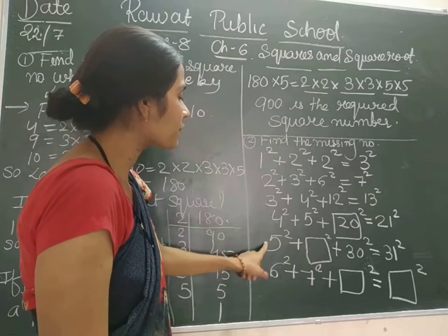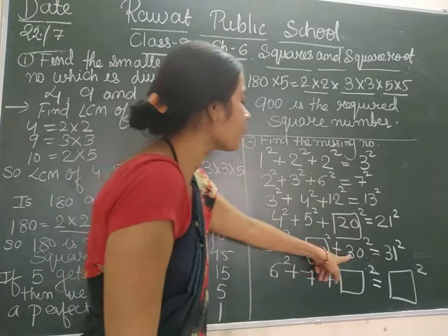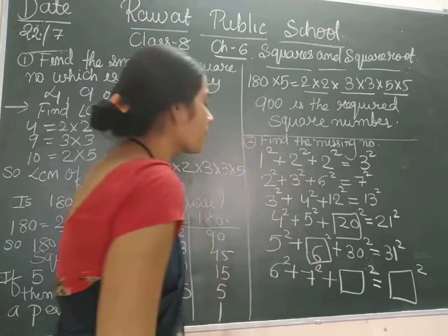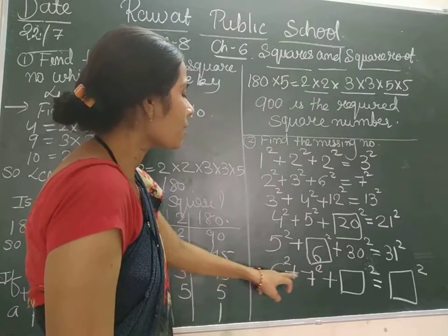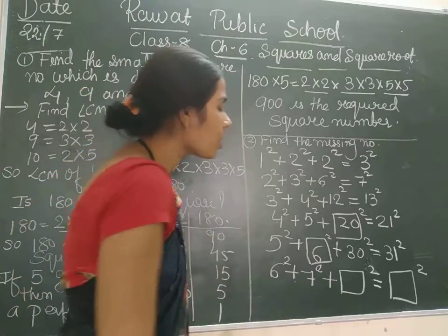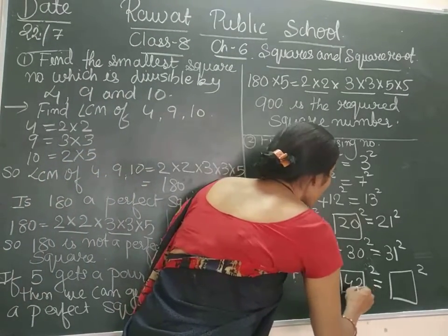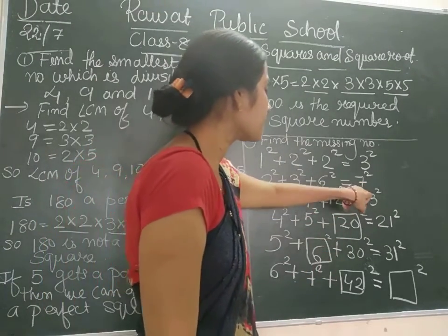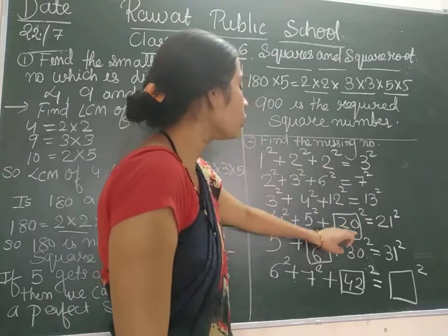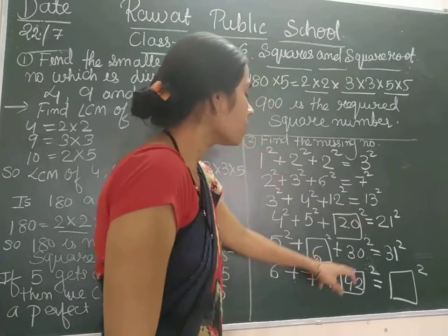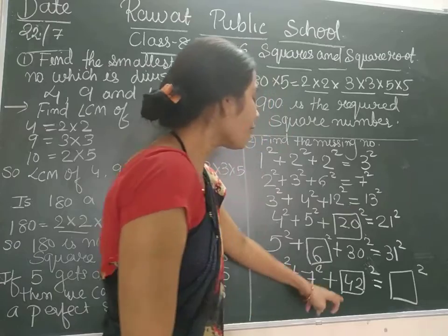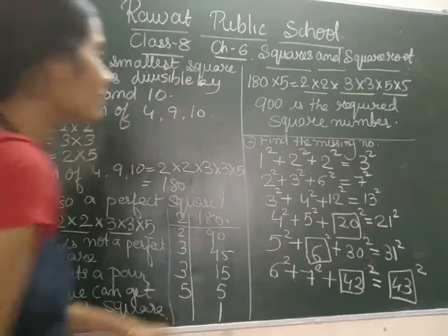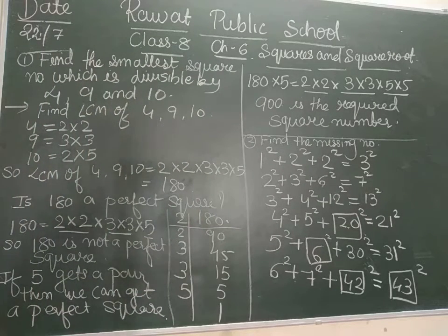Next, 5 into 6 is 30, so it becomes 6² + ... + 30². And 6 into 7 is 42, so it becomes 40². You can also see the pattern: 6+1=7, 12+1=13, 20+1=21, 30+1=31, 42+1=43. In this way we have found out all the missing numbers from the pattern.